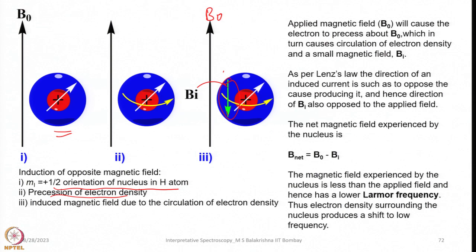As per Lenz's law, the direction of an induced current is such as to oppose the cause producing it. Hence the direction of B_i always opposes the applied magnetic field. The net magnetic field experienced by the nucleus is B_net = B_naught − B_i. So the magnetic field experienced by the nucleus is less than the applied magnetic field, and hence a lower frequency is required.